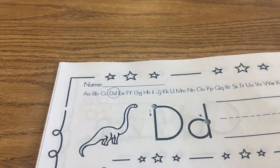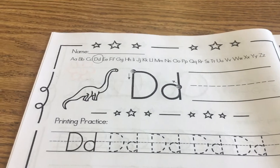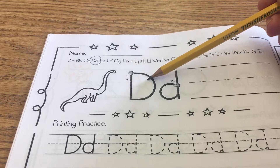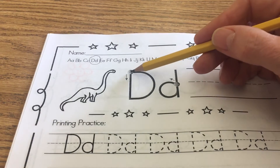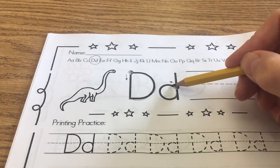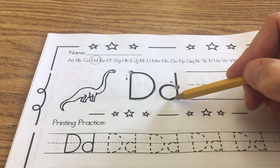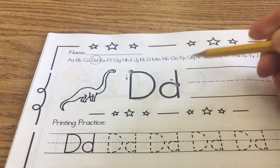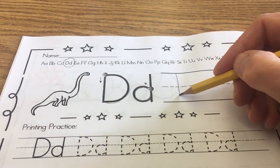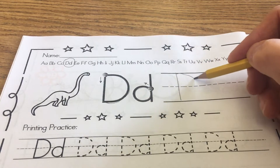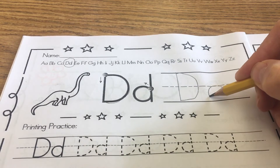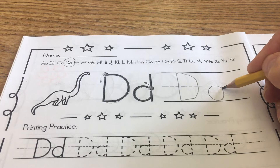Go ahead and circle the capital and lowercase D. You'll see that for the picture we have dinosaur — D, dinosaur. Capital D, lowercase d. Go ahead and trace the capital D, starting at the dot. Make the big curve first and then make your stick attached to that, and then go ahead and write that by yourself.